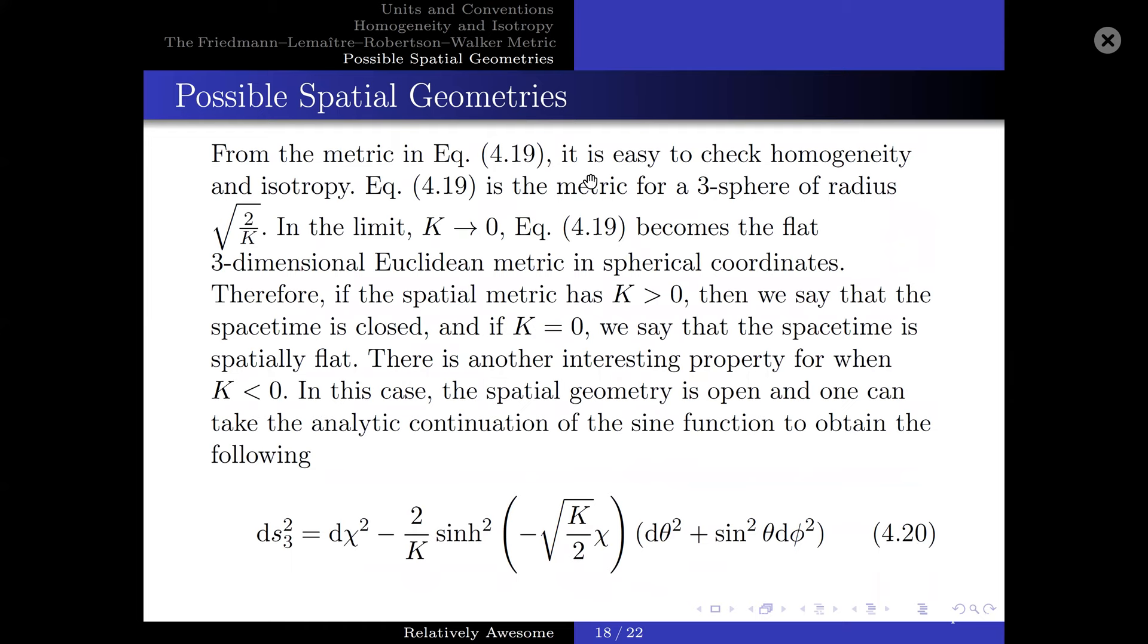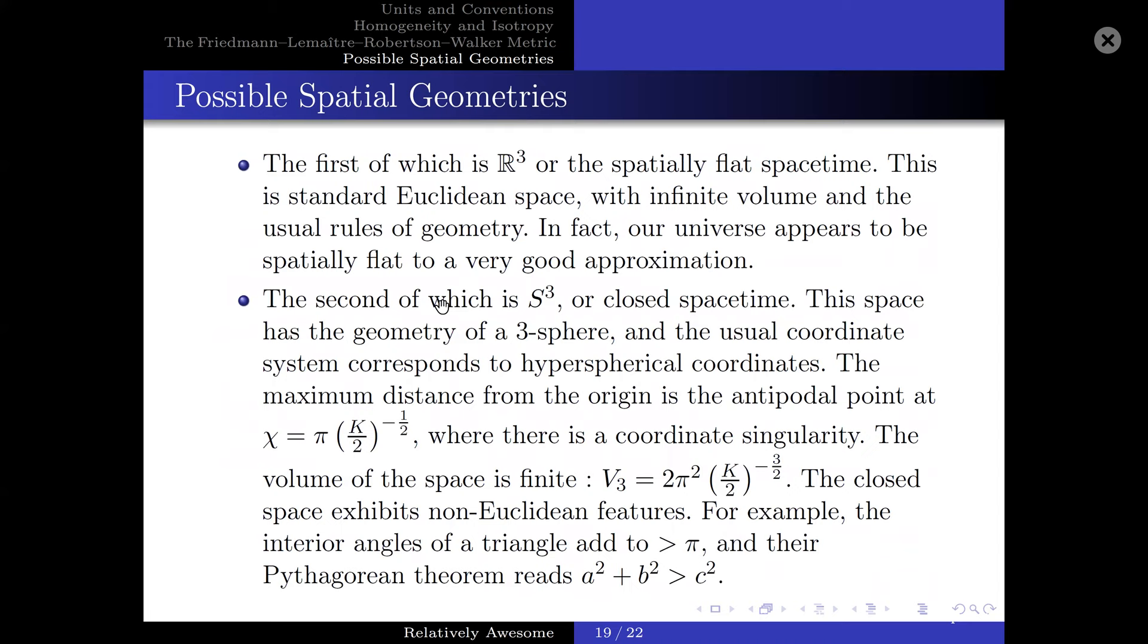From this, the metric in equation 4.19, it is easy to check homogeneity and isotropy. Equation 4.19 is the metric for a 3-sphere of radius square root 2 over K. In the limit K goes to zero, equation 4.19 becomes flat, and becomes the flat three-dimensionally Euclidean metric in spherical coordinates. Therefore, if the spatial metric has K greater than zero, we can then say that the spacetime is closed, and if K is equal to zero, we can say the spacetime is spatially flat. There is another interesting property when K is less than zero. In this case, the spatial geometry is open, and one can take the analytic continuation of the sine function to obtain the following.